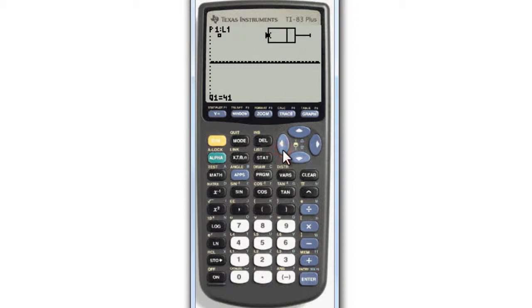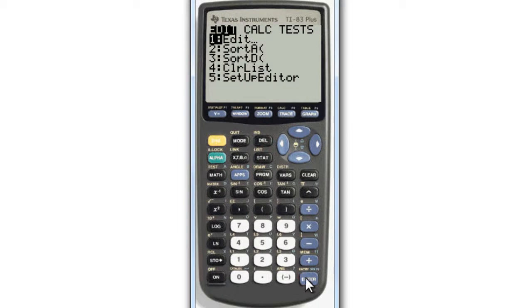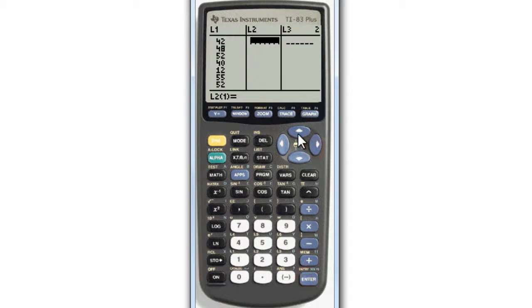If you wanted to draw another box plot to compare the two, follow the same steps. Go STAT and then EDIT. In list 2, put some more data here.